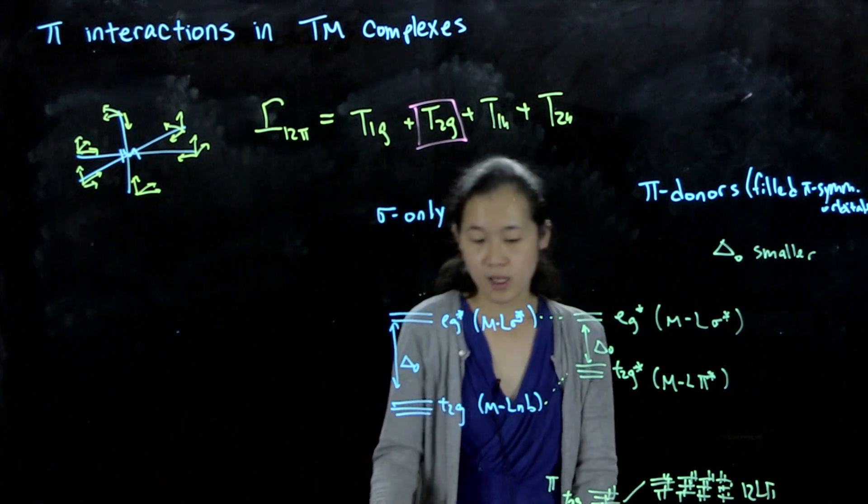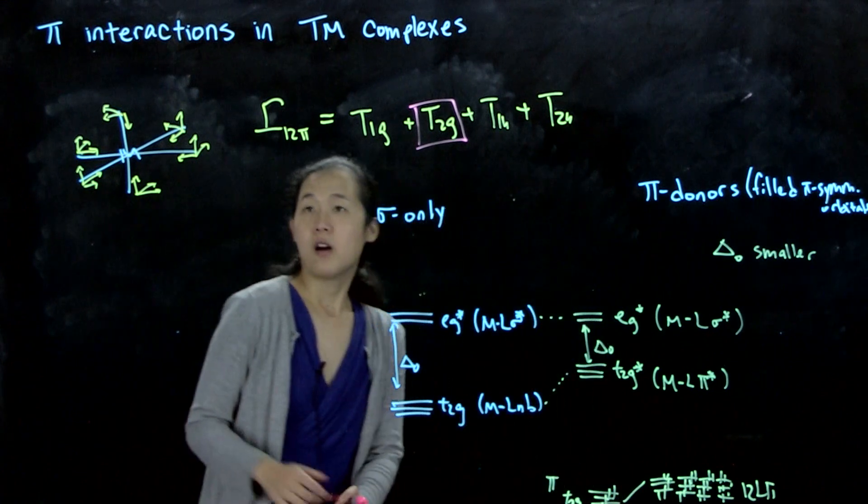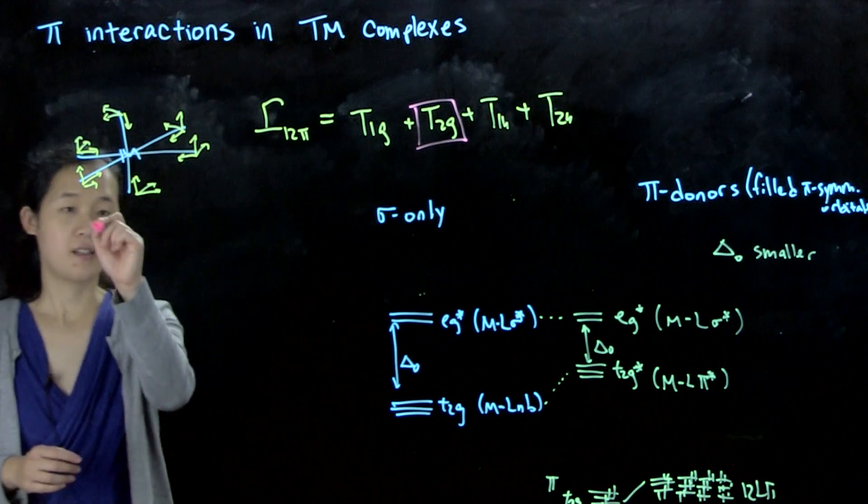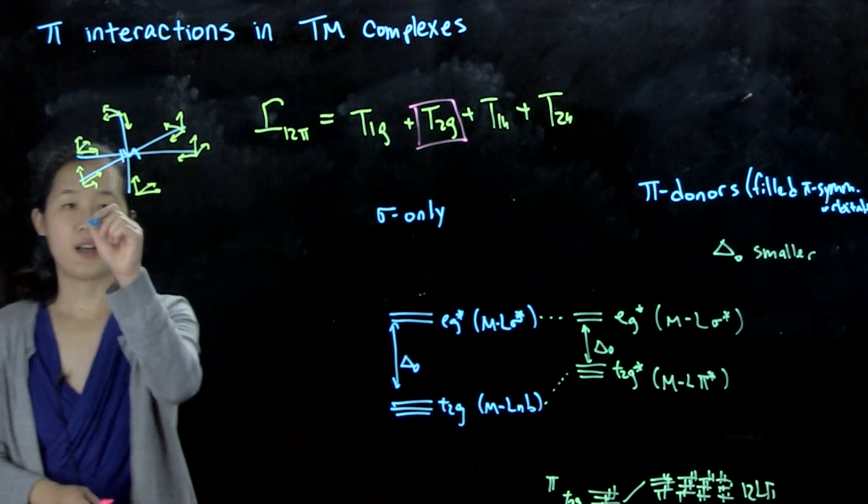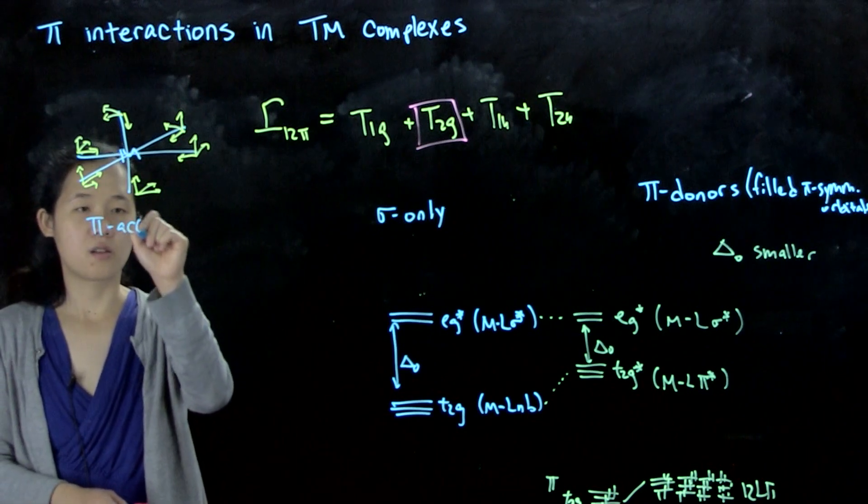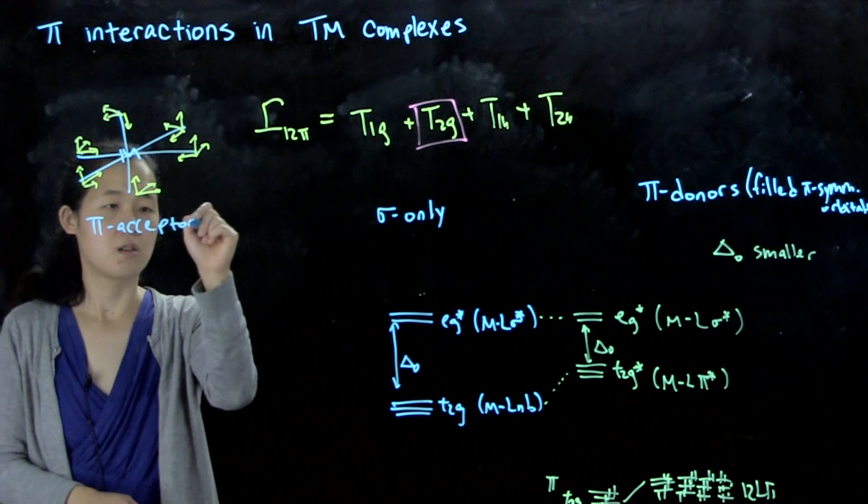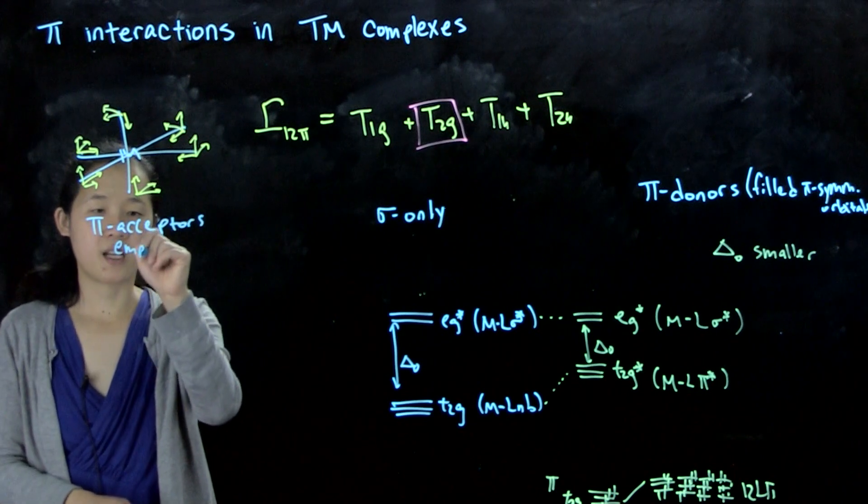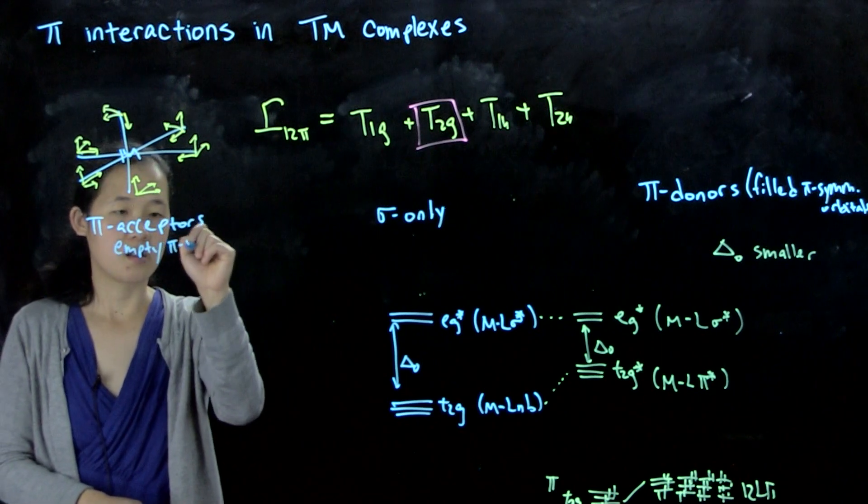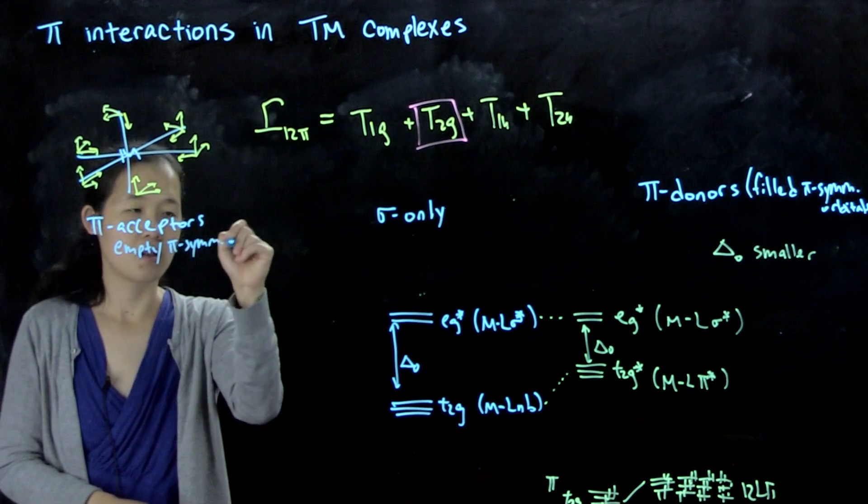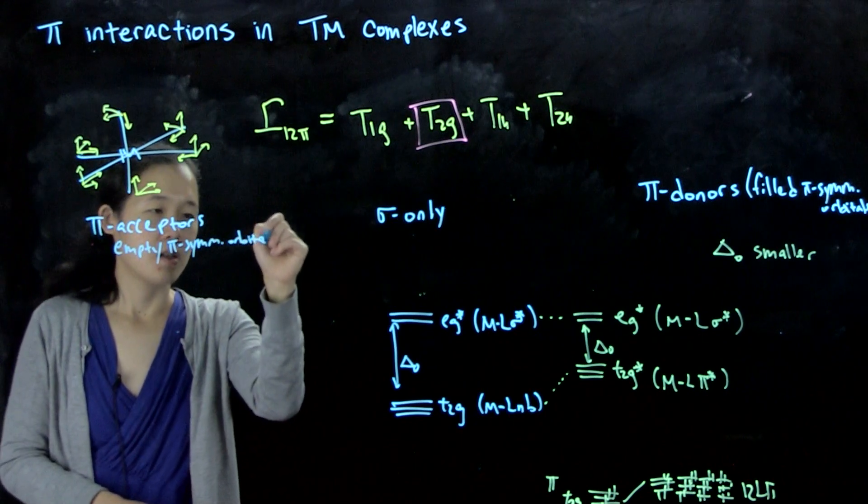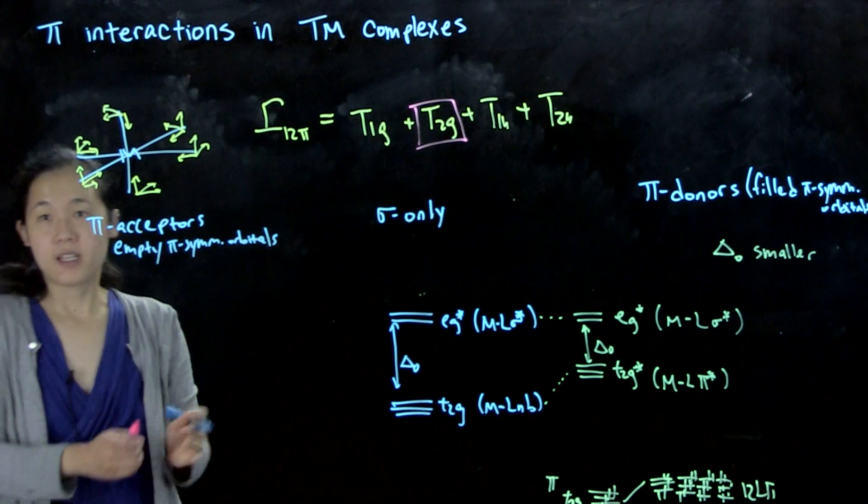In comparison, if we think about pi-acceptors. Pi-acceptors have empty pi-symmetry orbitals.